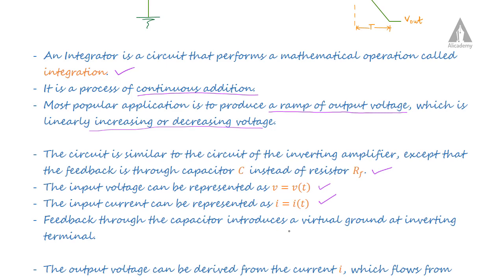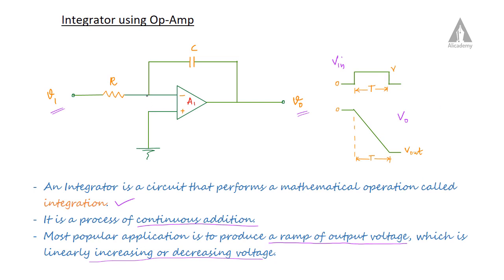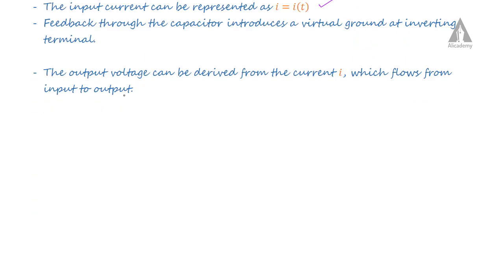Feedback through the capacitor introduces a virtual ground at the inverting terminal. The non-inverting terminal is grounded, so obviously this inverting terminal will be virtually grounded. Now the output voltage can be derived from the current I which flows from input to output.